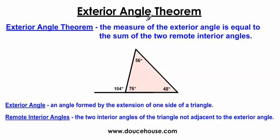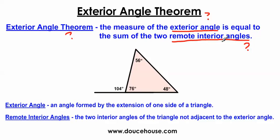What is the exterior angle theorem? It's the measure of the exterior angle equal to the sum of the two remote interior angles. And you might be like, what in the world did that mean? Well, let me go over a couple words you might not be familiar with — you might not know what an exterior angle is, you might not know what remote interior angles are. So let me go over these concepts first, then I'll go over the exterior angle theorem.